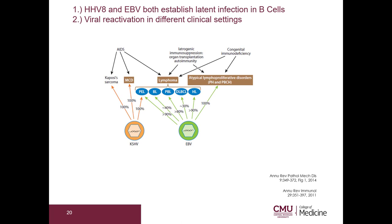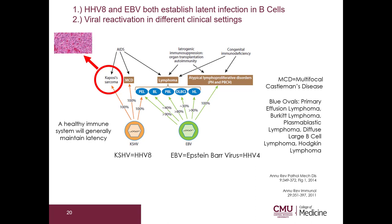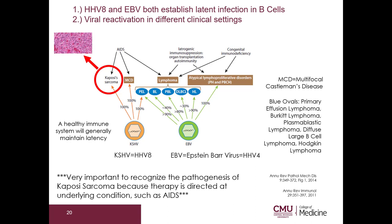This drawing demonstrates HHV-8 and EBV, with orange and green representing latent infection. A healthy immune system will generally maintain latency. In AIDS with HHV-8, a Kaposi's sarcoma can develop. It is very important to recognize the pathogenesis of Kaposi's sarcoma because therapy is directed at the underlying condition, such as AIDS. In the 1980s and 1990s, it was extremely common to see AIDS patients with severe Kaposi's sarcoma; however, now that there are very good treatments available for AIDS, we rarely see Kaposi's sarcoma anymore.